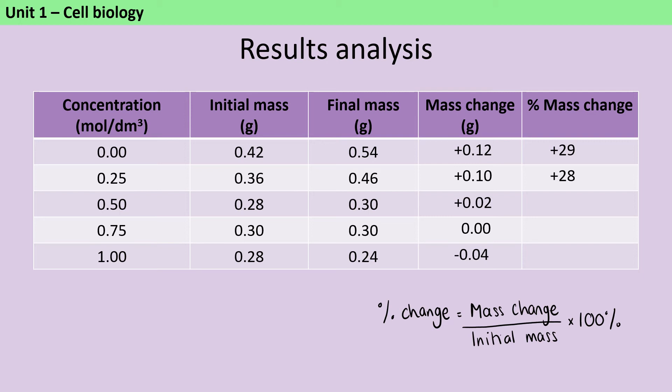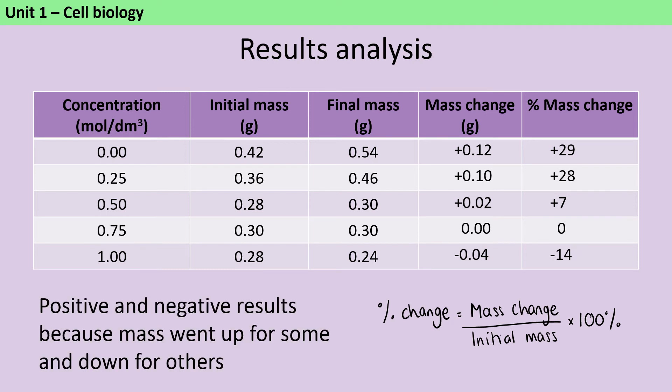And then for the second piece of potato, it's only increased by 28%. The third piece only by 7%. The fourth piece, of course, hasn't changed mass. And the final piece of potato has decreased in mass by 14%. So again, we've got those positive and negative numbers. And what those are indicating to me is that the mass has gone up for some of these pieces of potato and it's gone down for the others. And the difference here is based on whether the solution that they're in is more or less concentrated than the tissue fluid inside the potato cells.